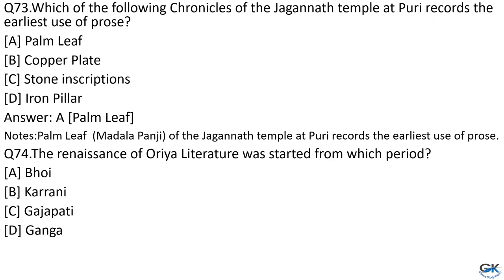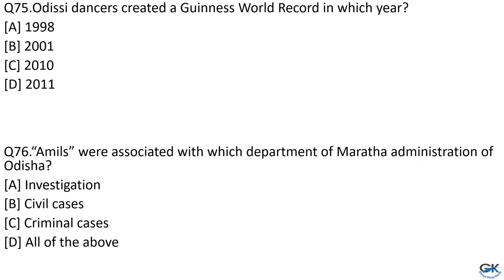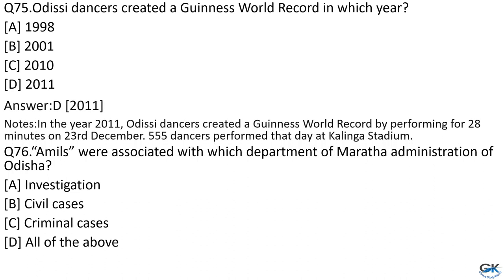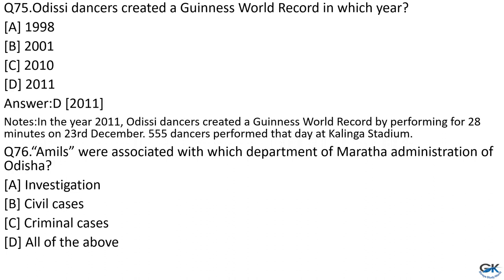Question No. 74: The renaissance of Odia literature started from which period? Option A: Goi. Option B: Karani. Option C: Gajapati. Option D: Ganga. The answer is Option C, Gajapati. Question No. 75: ODC dancers created a Guinness World Record in which year? Option A: 1998. Option B: 2001. Option C: 2010. Option D: 2011. The answer is Option D, 2011. In 2011, ODC dancers created a Guinness World Record by performing for 28 minutes on 23rd December; 555 dancers performed at Kalinga Stadium.